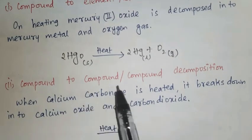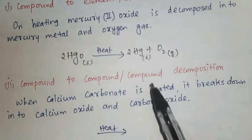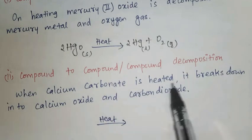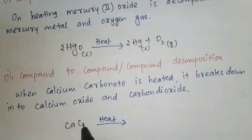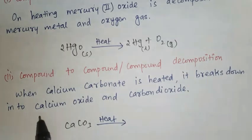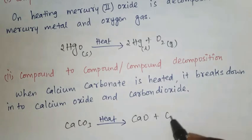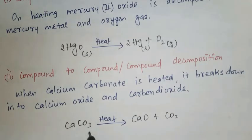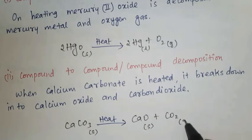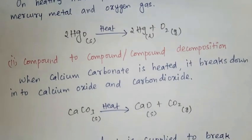Second type: a compound decomposes into a compound and another compound. When calcium carbonate (CaCO₃) is heated, it breaks down into calcium oxide (CaO) and carbon dioxide (CO₂). Calcium carbonate is in the solid state, calcium oxide is also in the solid state, and carbon dioxide is in the gaseous state.